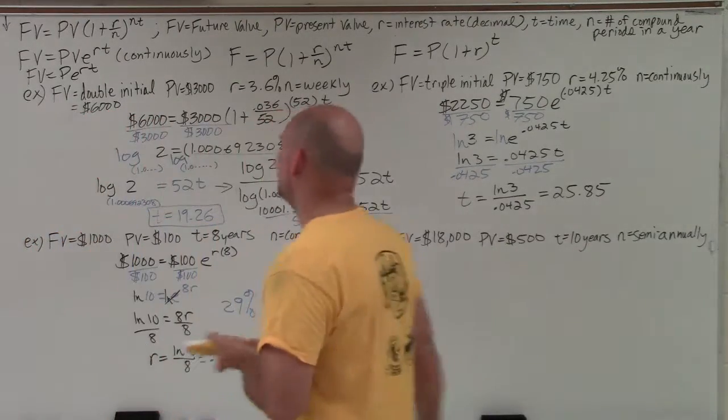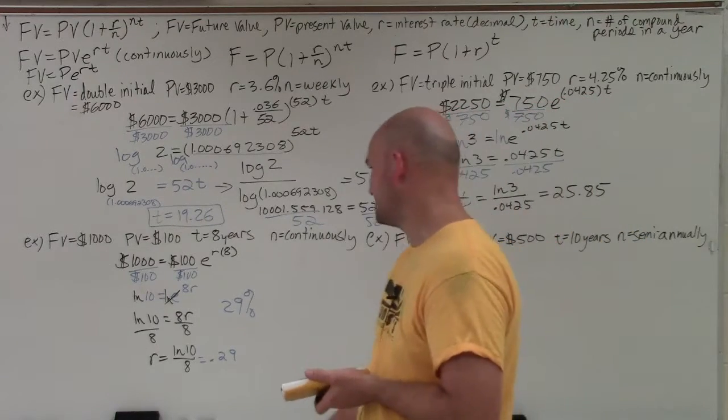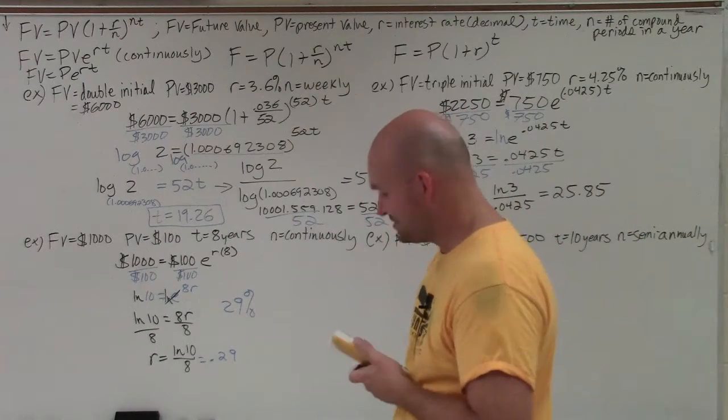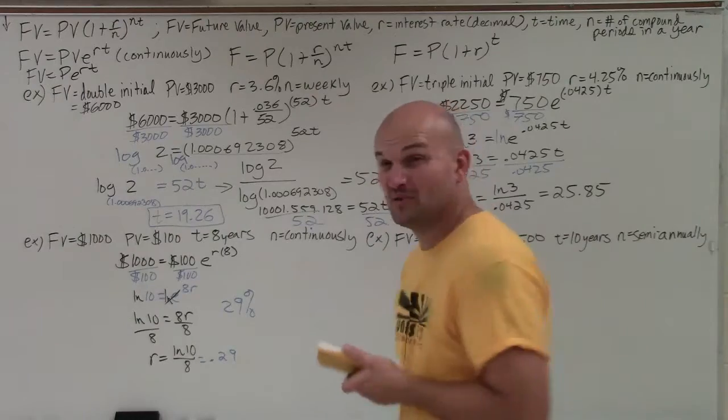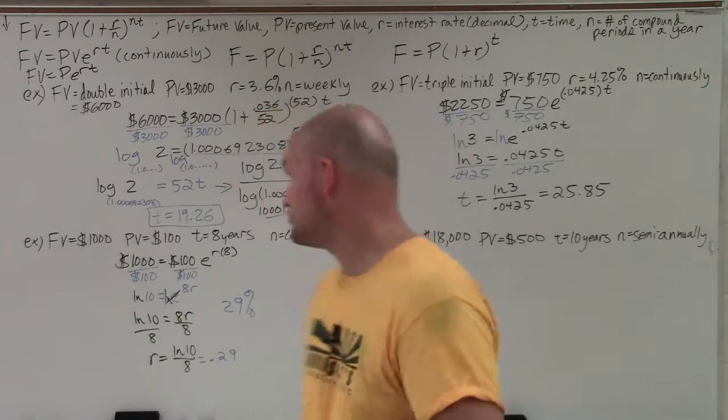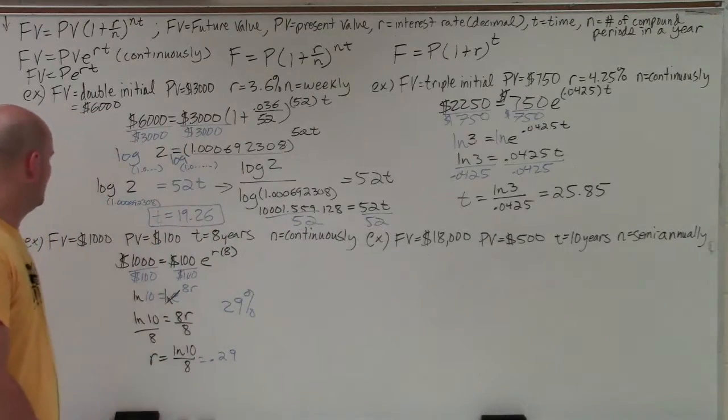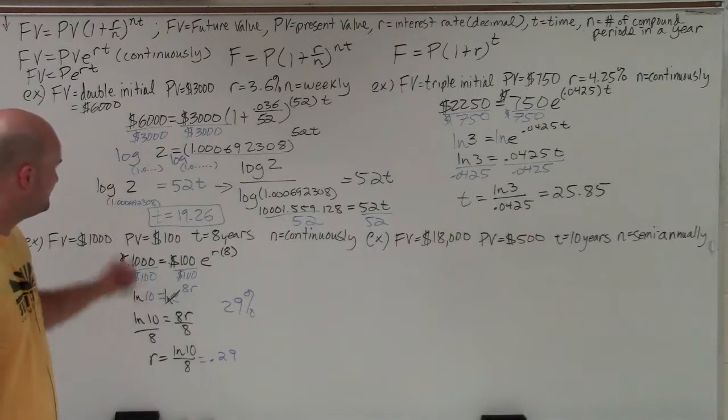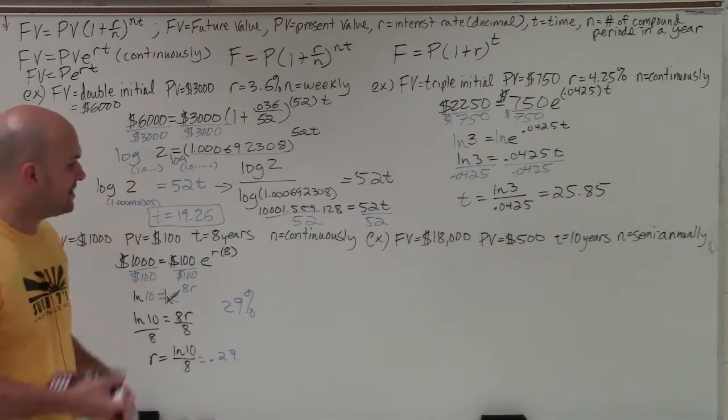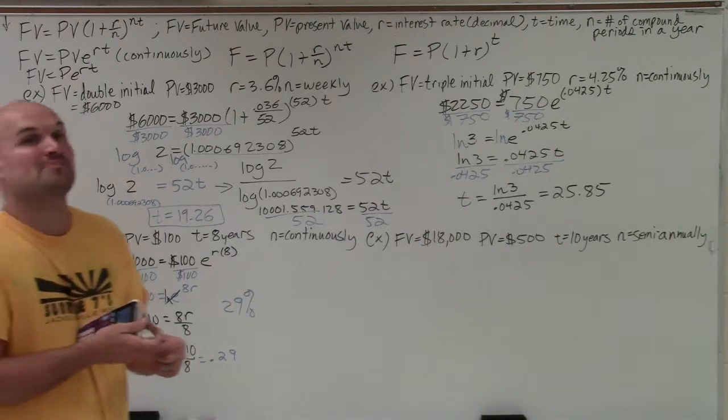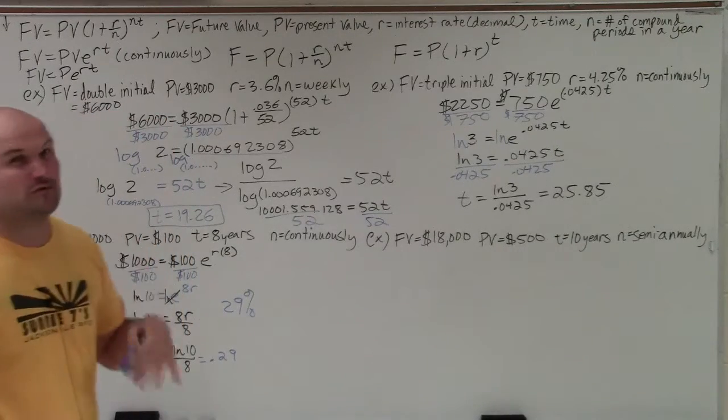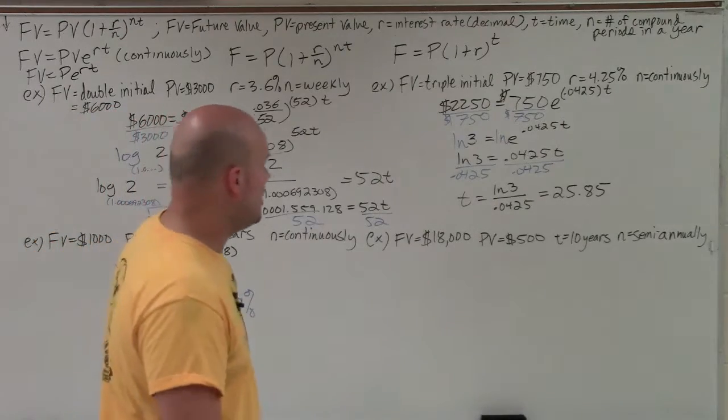So therefore, as percentage, I would need to earn 29% for me to go from $100 to $1,000 in eight years compounded continuously. So pretty high interest rate, right? You're not even doubling your money. I mean, you're trying to earn a lot of money over into a small amount of time. So compound interest works best over long periods of time. But over a short period of time, you're going to have to have a really high interest rate.